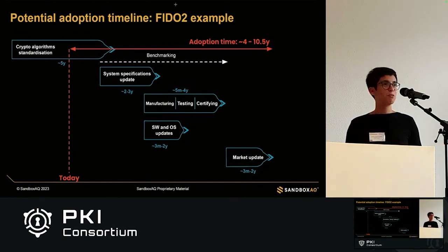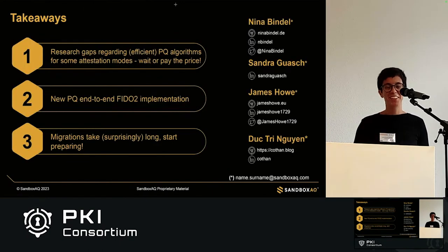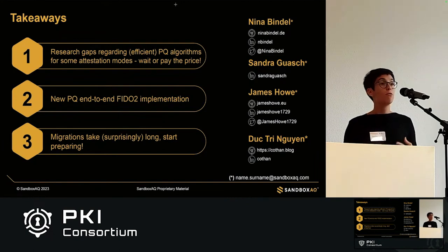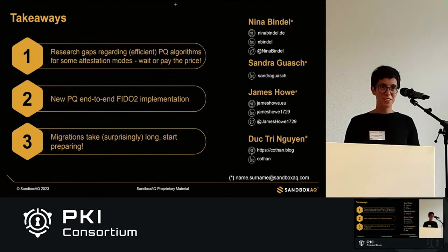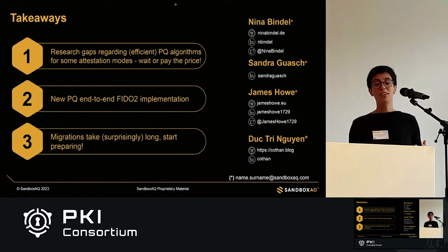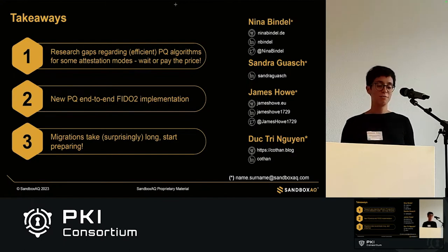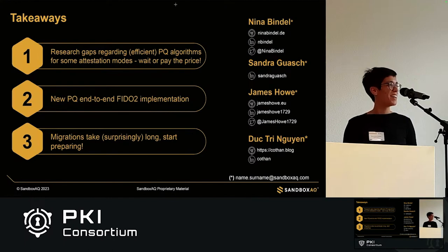That's food for thought about updating authentication systems. Some takeaways: there are research gaps regarding efficient post-quantum algorithms for advanced attestation modes — not only for FIDO 2 but also for other environments relying on constrained hardware. We may need to wait for new algorithms or require bigger hardware. We have a new open-source PQC FIDO 2 implementation coming soon with more benchmarks. And migrations take a long time — start preparing now.